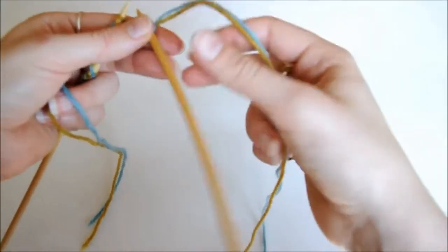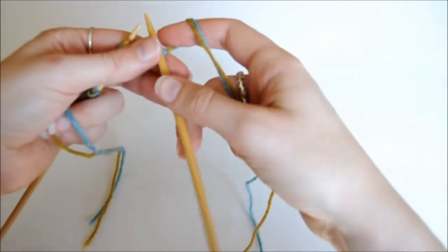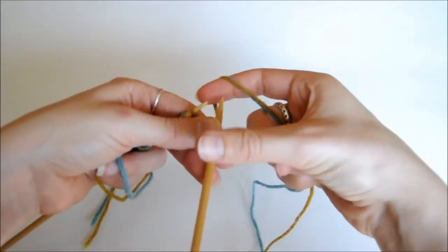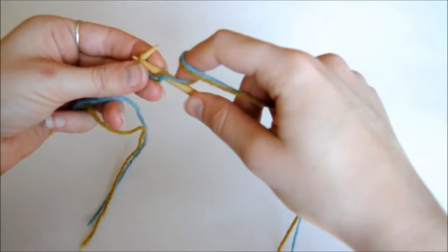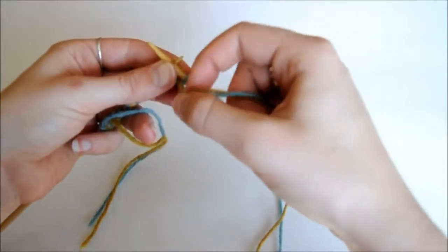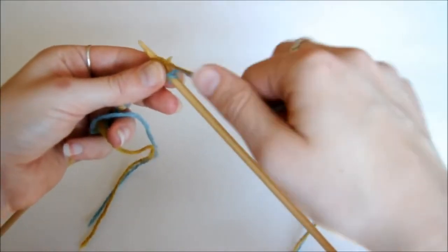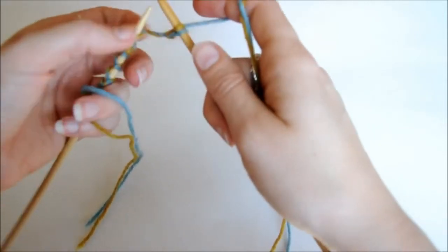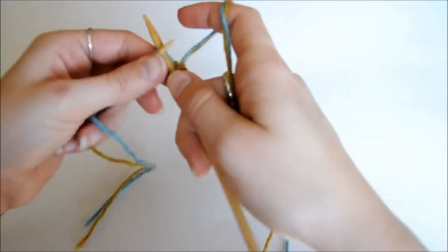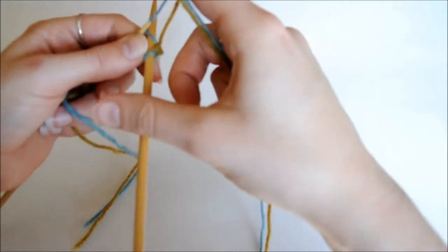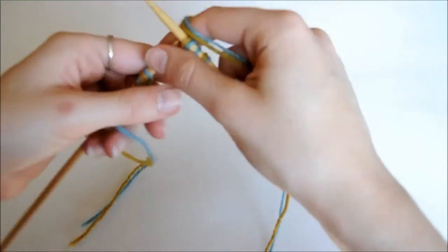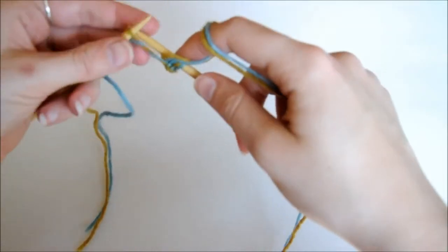And we're going to hold these two strands together at all times, even though we're only going to knit and purl with one strand at a time. So we're going to bring these to the front, and purl through the yellow using the yellow strand of yarn. We're going to bring both of these back, and then knit through the back loop with just the blue. And we're going to continue like that until we reach the end of the row.